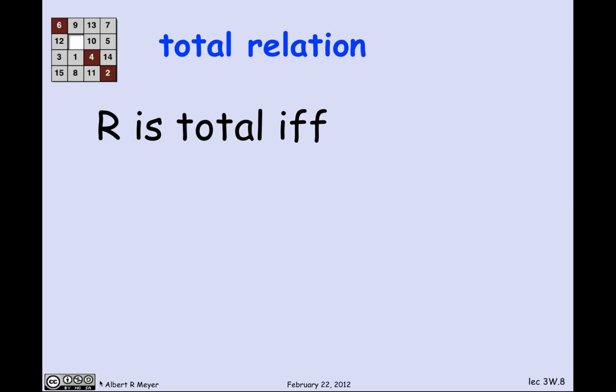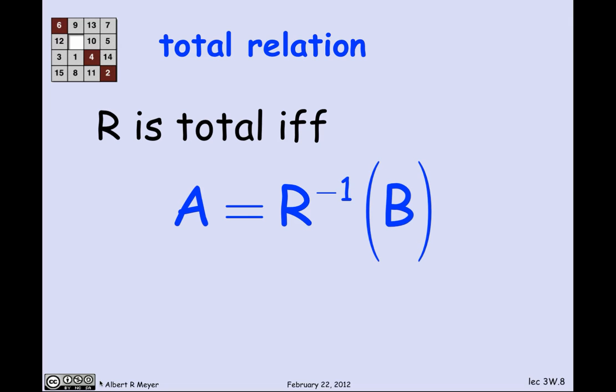Another way to say total is to say that the inverse image of the codomain is equal to the domain. That means if you take all the arrows coming out of the domain, turn them around, and look at all the things that have arrowheads into them, it's the entire domain. So that's what R inverse of B equals A means — a nice, slick set-theoretic way to express it.